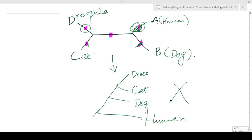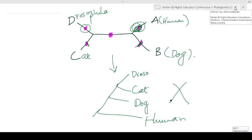That is totally wrong because human is not the most distantly related species — human is the most recent species. So inserting the root is the key in generating the phylogenetic tree. If we insert the wrong root, it will totally disrupt the whole tree. You can also find this in the discussion section in the slides.